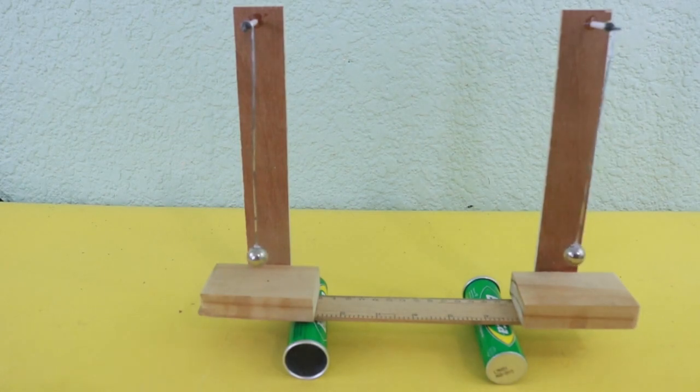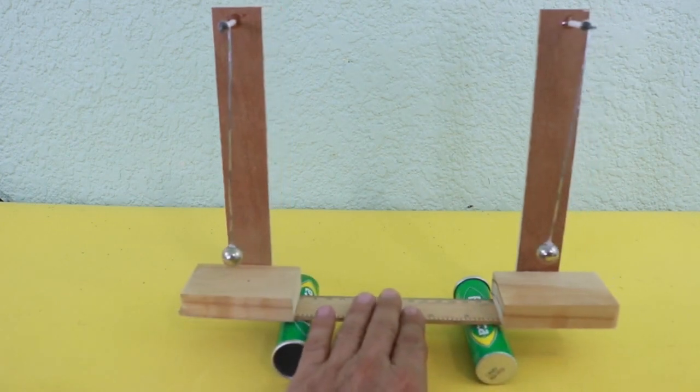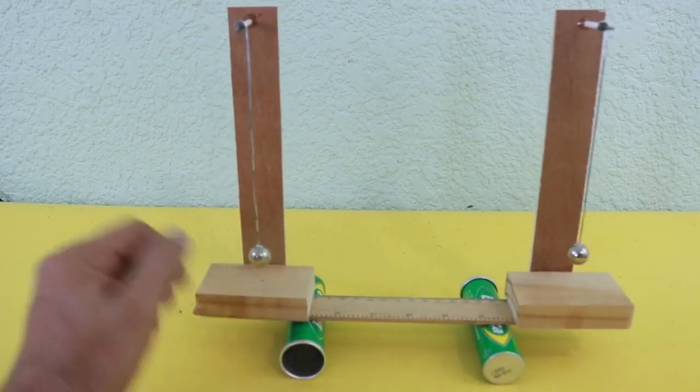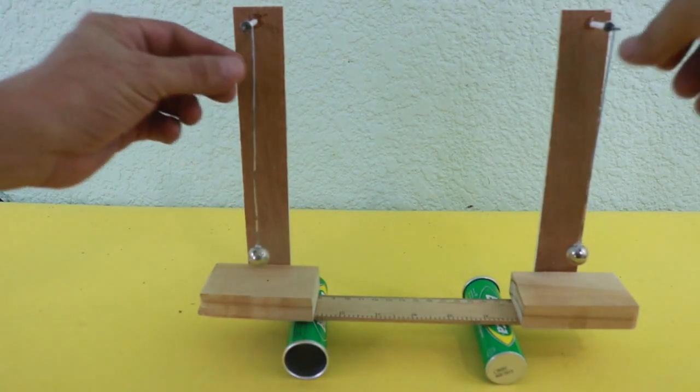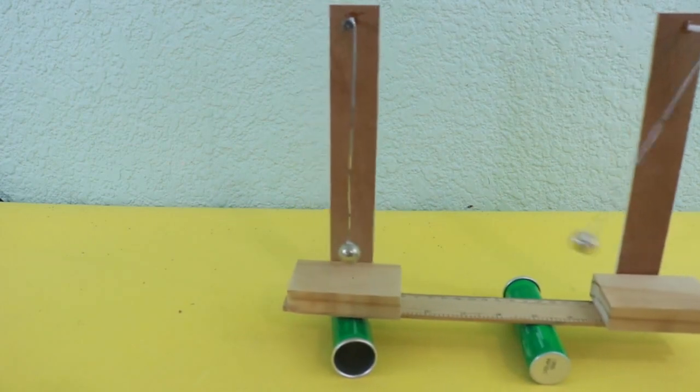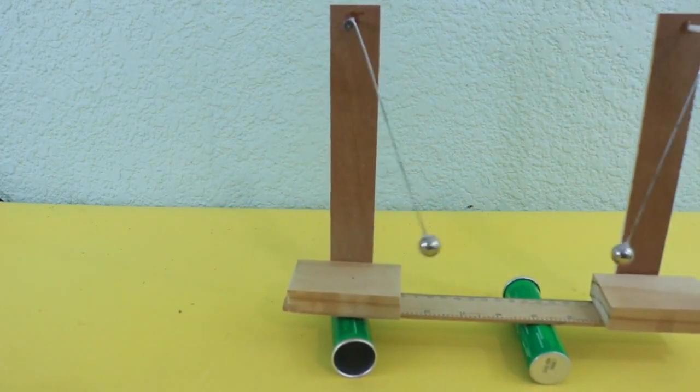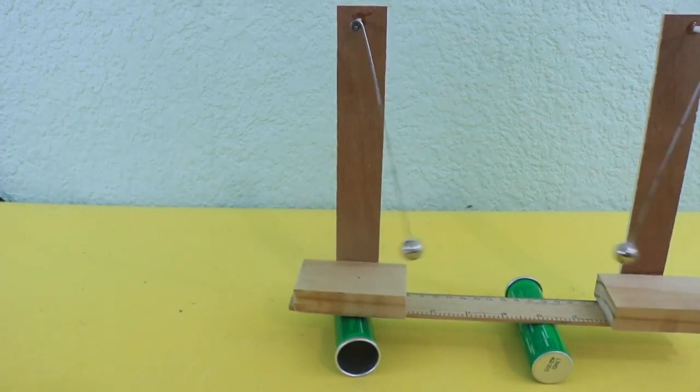Well, I made the experiment and the result was somewhat unexpected. I have the two pendulums mounted on the ruler and everything can move because of the cylinders below. So let me start the pendulums out of phase and you can see how they finally synchronize.